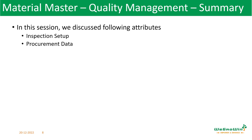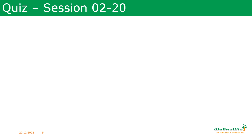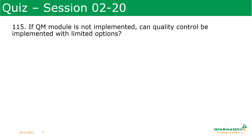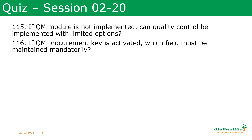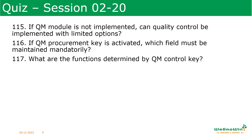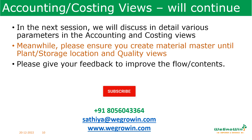In this session we discussed the quality management tab — the inspection-related details and the procurement-related quality details. Now let us discuss the quiz for this session. If the quality management module is not implemented, can quality control be implemented with limited options? If a QM procurement key is activated at the client level, which field must be maintained mandatorily? What are the functions determined by the control key? Answers will be discussed in the next session. In the next session, we will discuss in detail the various parameters in the accounting and costing views. Please ensure you create the material master up to the plant storage location views and also this quality view.